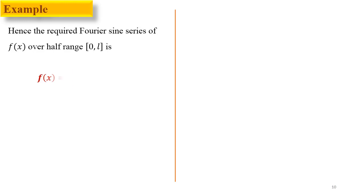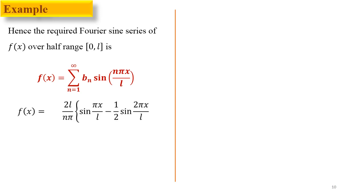The required half-range Fourier sine series is: f(x) = (2L/π)[sin(πx/L) − (1/2)sin(2πx/L) + ...]. This is the required Fourier sine series for the function f(x) = x.